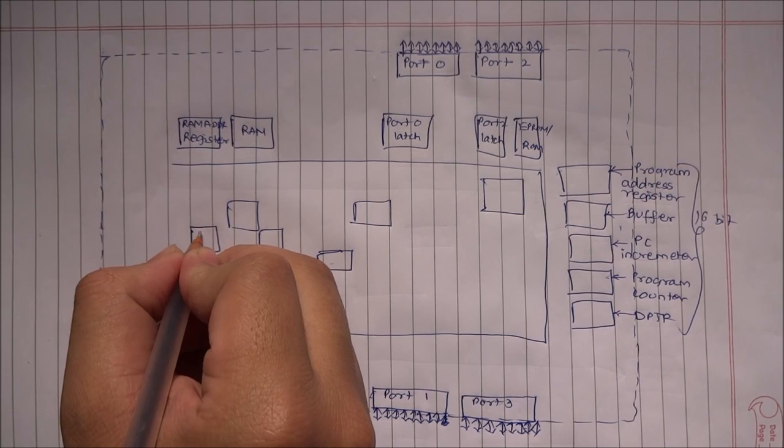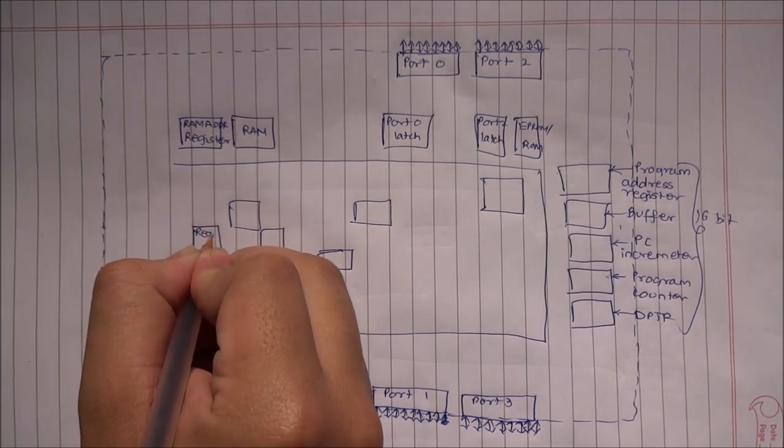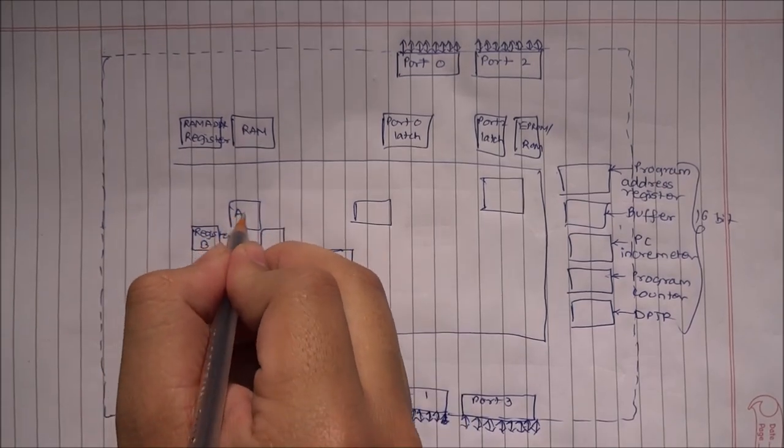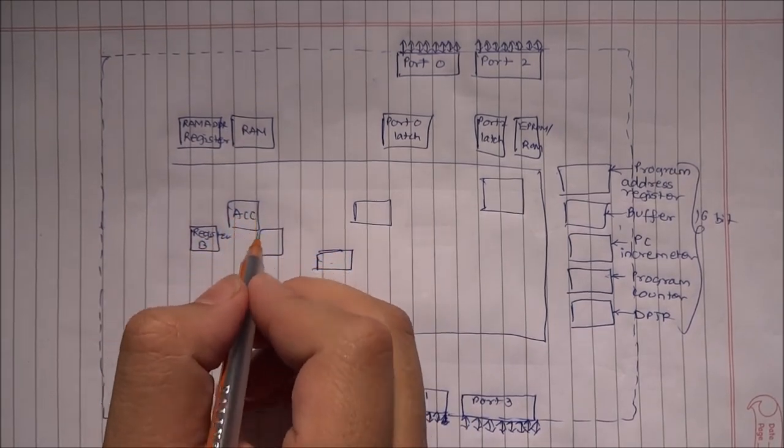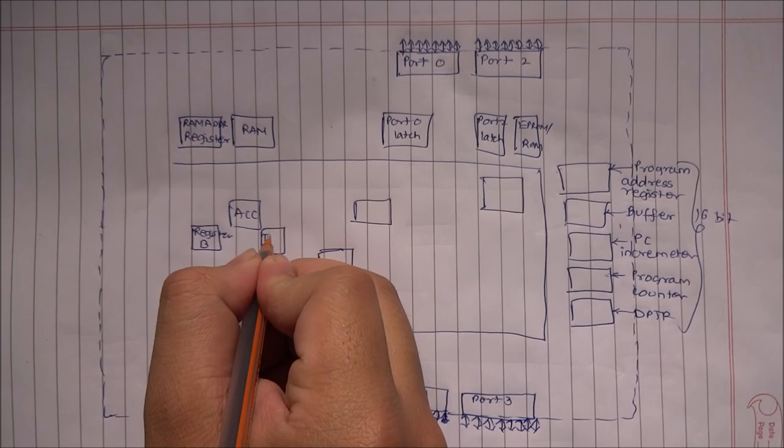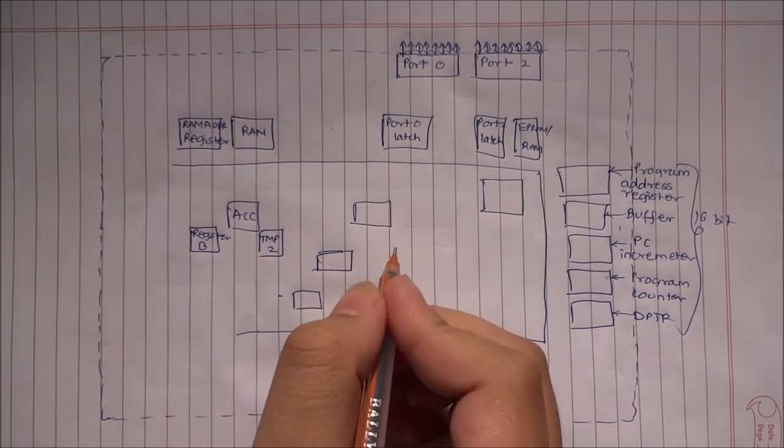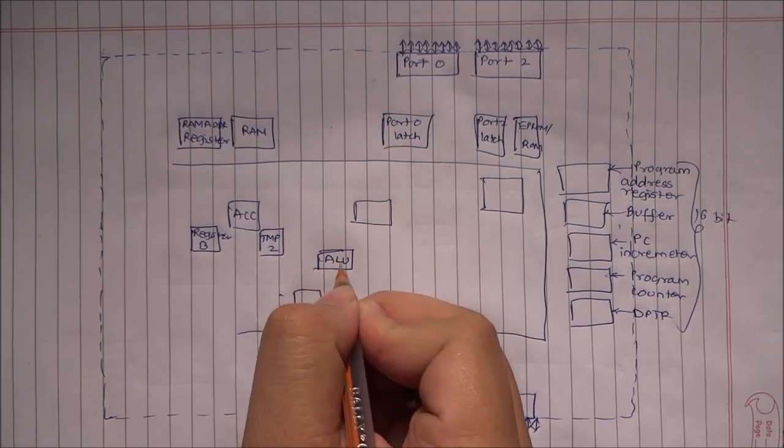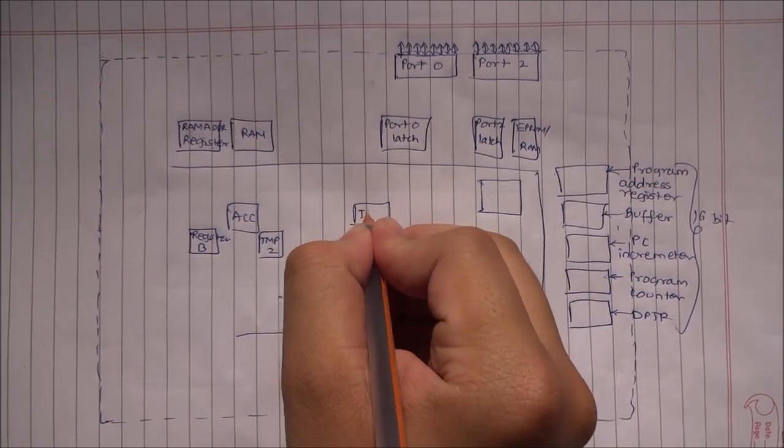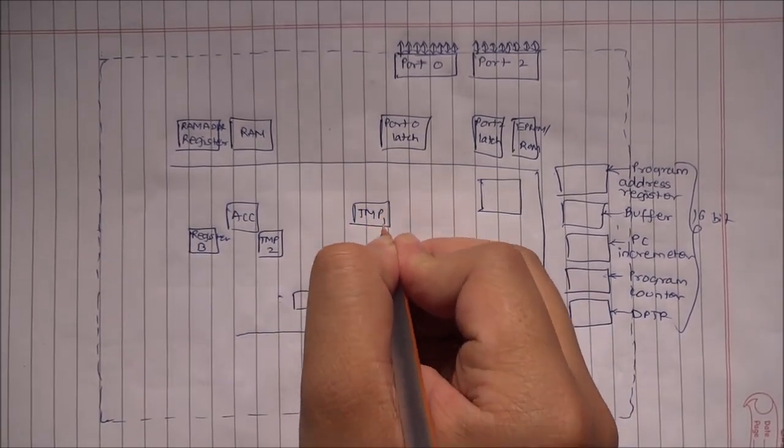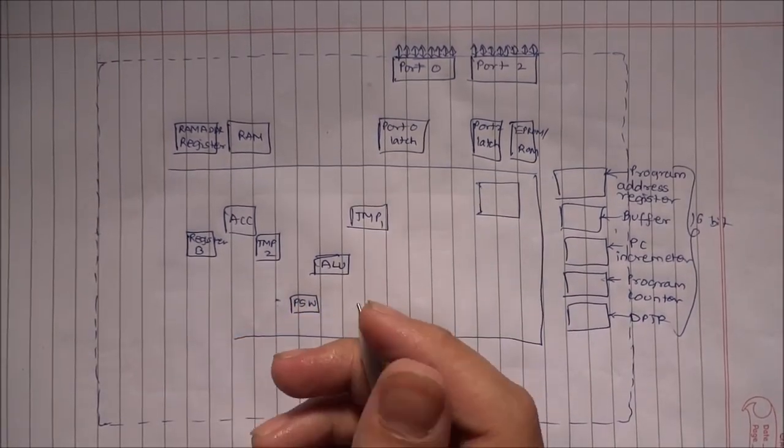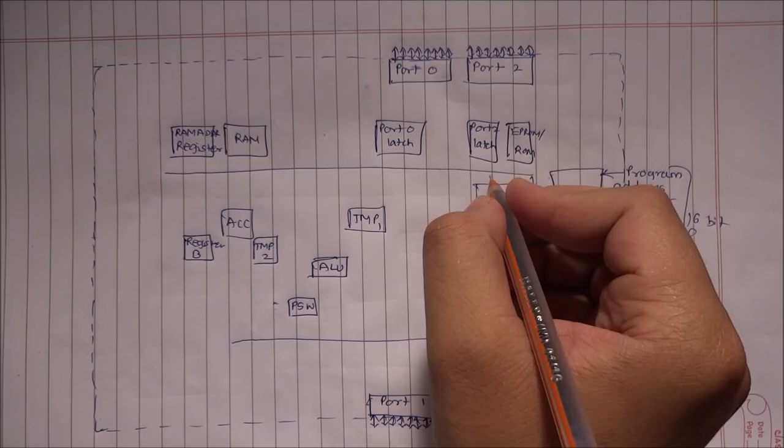This one is the register B block. This one is the accumulator register block. This block is temporary 2. This block is arithmetic and logic unit ALU. This block is temporary 1. This block is PSW program status word.